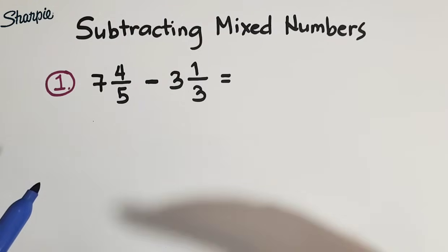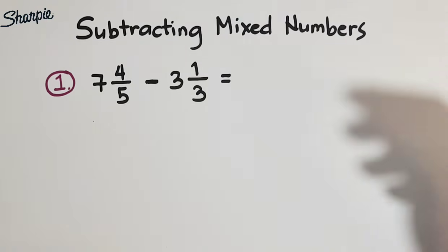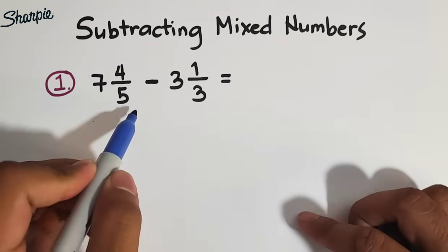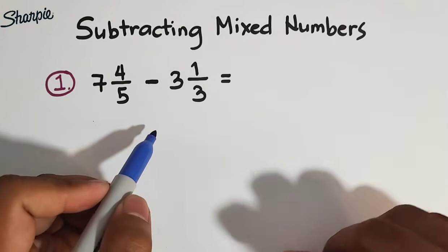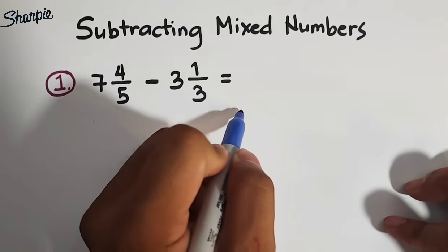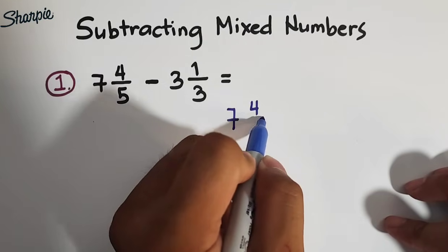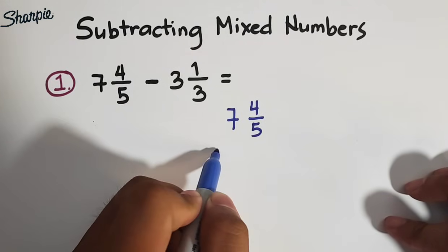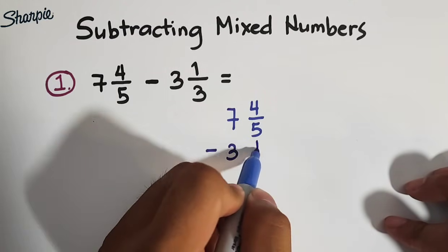So later on, we also have two more examples for us to practice how to subtract mixed numbers. So let's try this one. 7 and 4 over 5 minus 3 and 1 third. I will try to subtract this vertically. So I will write this like this. 7 and 4 over 5 minus 3 and 1 third.